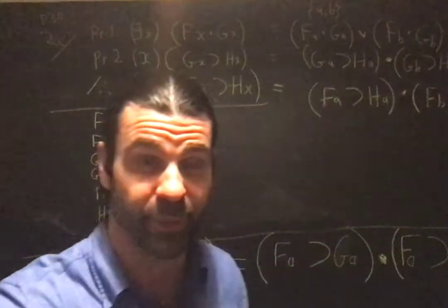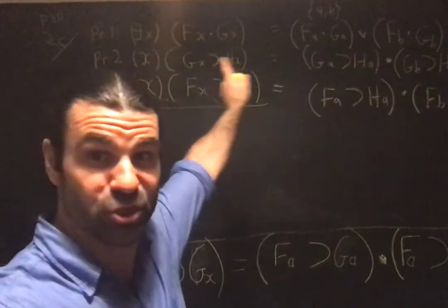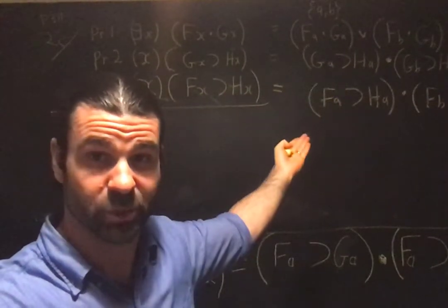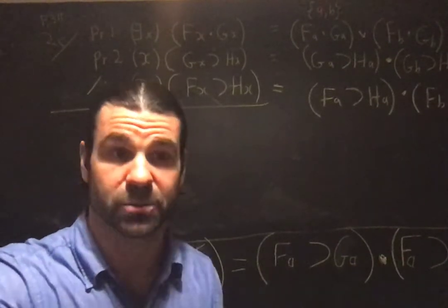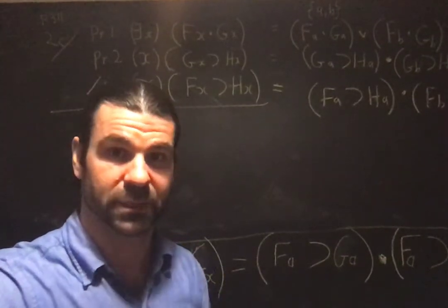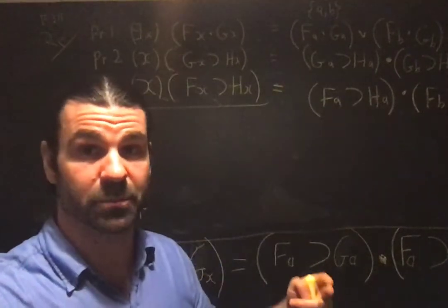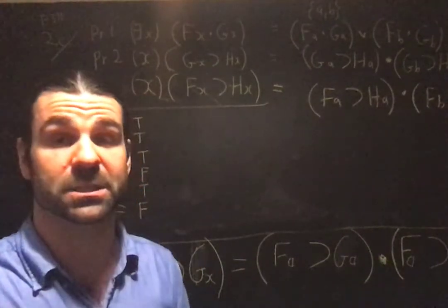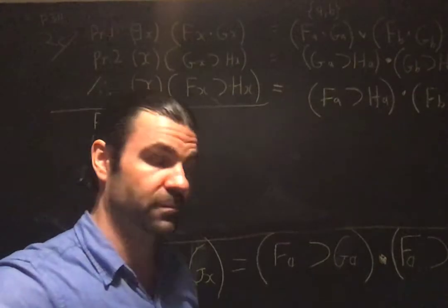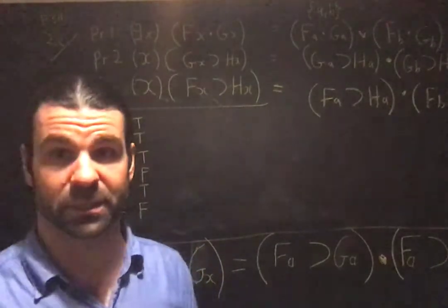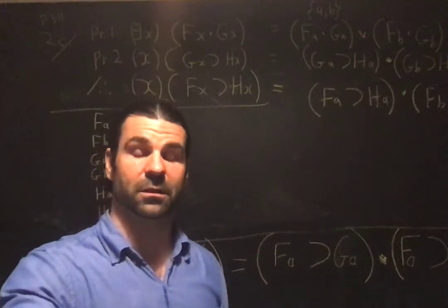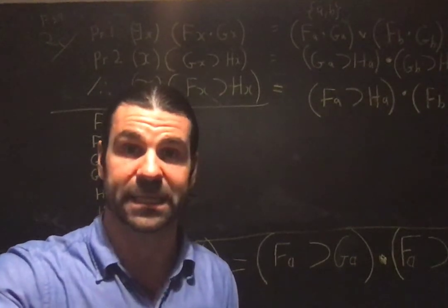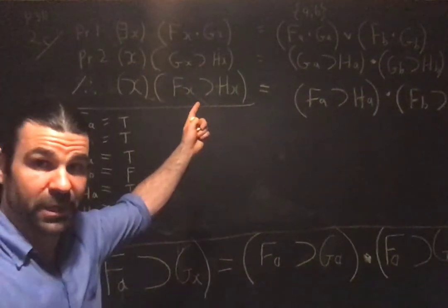So first thing you do, specify the domain. I recommend doing it just like that. Domain equals a and b. You're saying this is the domain of two individuals, you're looking for a counter example in this domain. And again, if you can't find one here, doesn't mean you're entitled to infer that the argument is valid, because a counter example might exist in a domain of more individuals.